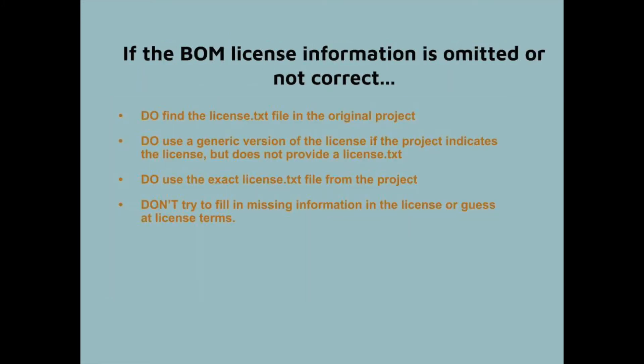Just as a reminder, here are the do's and don'ts. Do find the license.txt file — or sometimes it's called copying.txt — in the original project. Do use a generic version of the license if the project indicates the license but does not provide a license.txt or copying.txt. Do use the exact license file from the project, and don't try to fill in any missing information that you don't have.